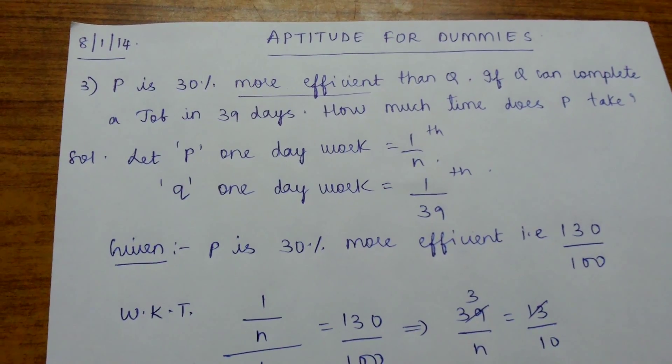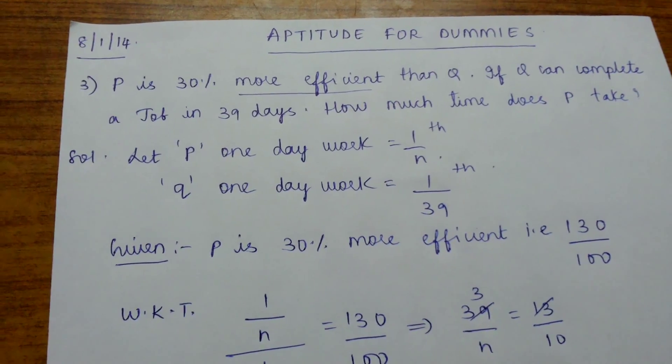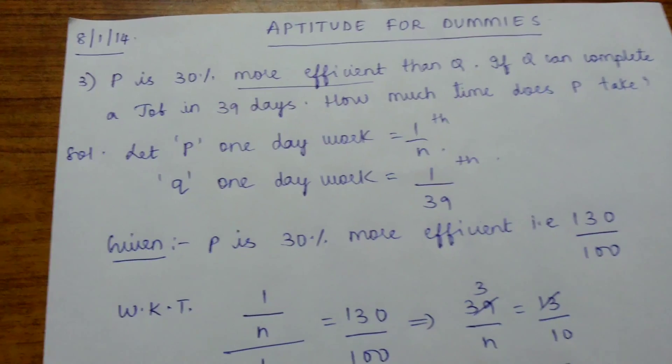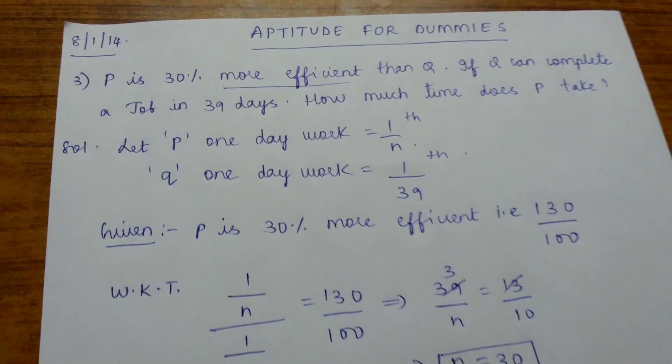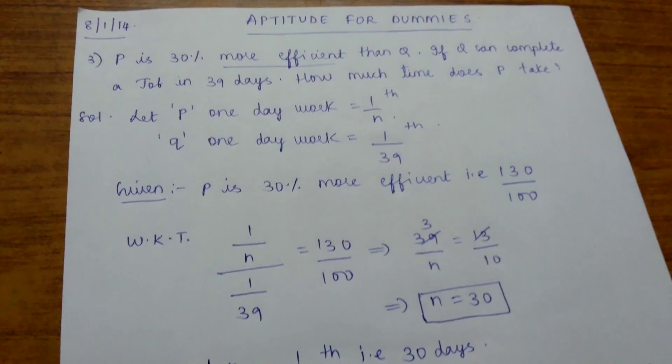P's one day work is 1 by N, because we are assuming that P completes the work in N days. Q's one day work is 1 by 39, because in the question he has given that Q completes the work in 39 days. P is 30% more efficient, that is 130 by 100, same as in the previous problem.